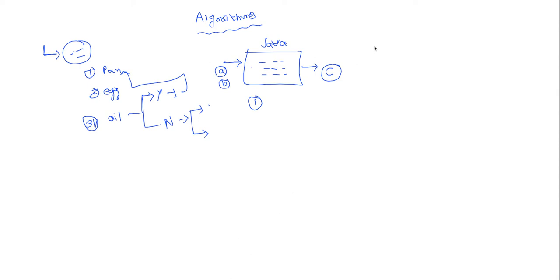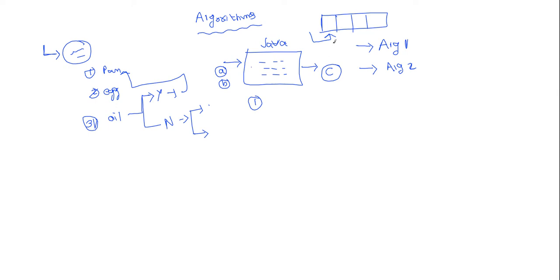Suppose I have two algorithms for the same problem. Algorithm one is a Java program written by one employee; algorithm two is another program for the same problem written by another employee. For example, the problem is: find a particular element in a given sorted array containing elements like 10, 20, 30, 35. My first employee gave one solution (algorithm one); my second employee gave another solution (algorithm two).